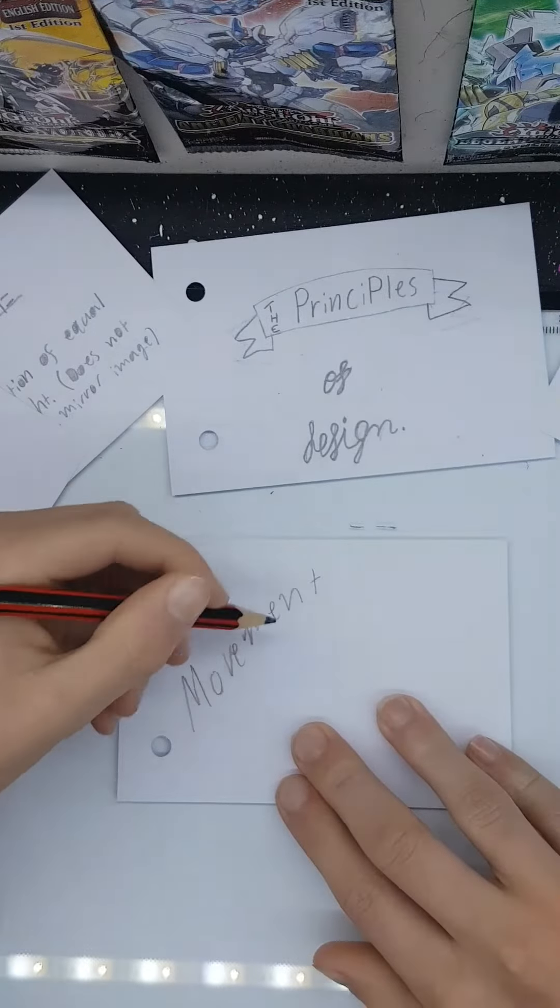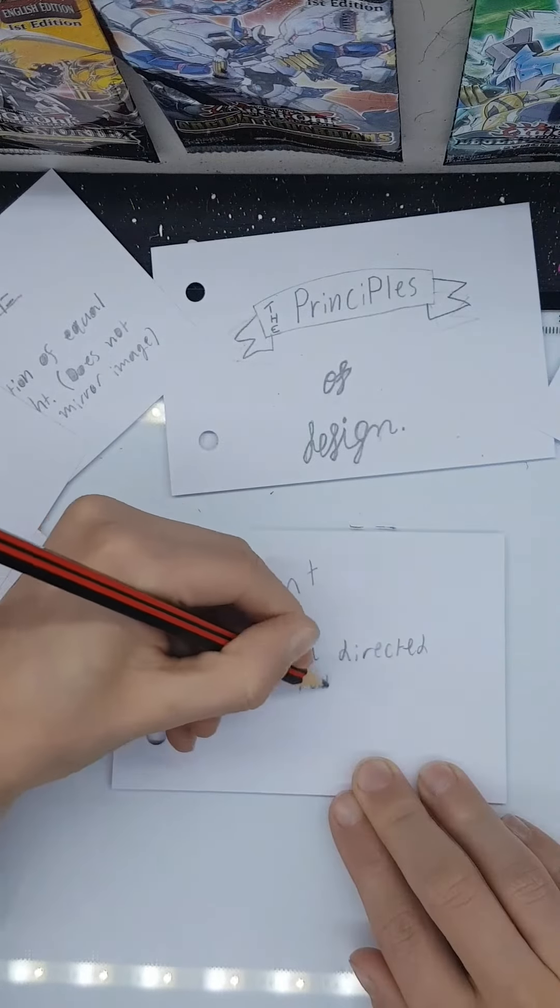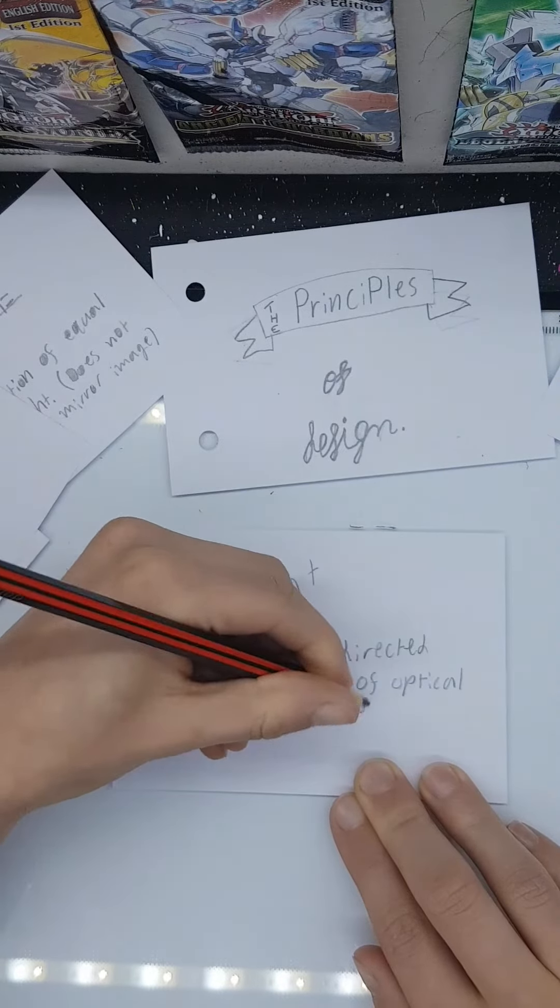Movement is a directed path of optical visual motion. Movement can be shown by a change of lines, colour or even scale.